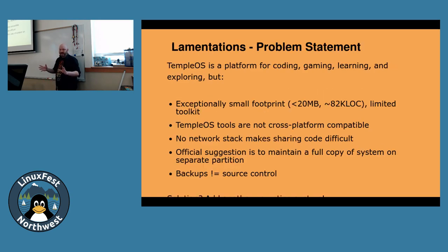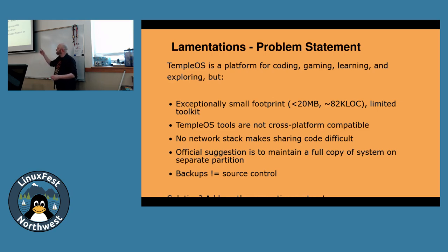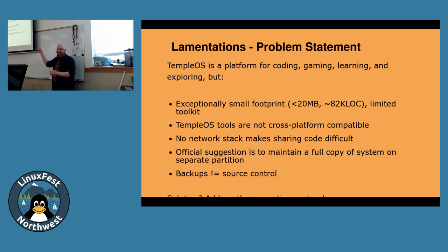So we've got Temple OS — we know we can code for it, game on it, learn about kernel design, timestamps, and date-time libraries. But it's exceptionally small: under 82,000 lines of code, the whole thing fits in about 20 megabytes. Temple OS tools are written in HolyC, not really cross-platform compatible, and of course there's no network stack, which makes sharing code really difficult. His official suggestion is to maintain an identical partition and copy things between them. But everyone here should already know backing up and source control are not the same thing.